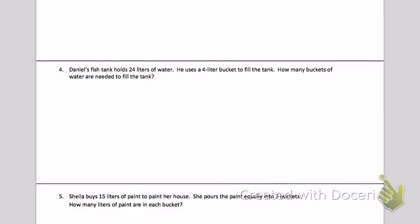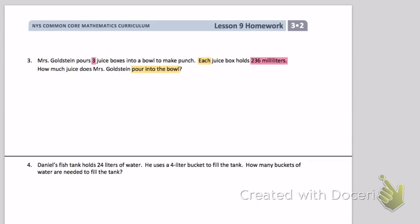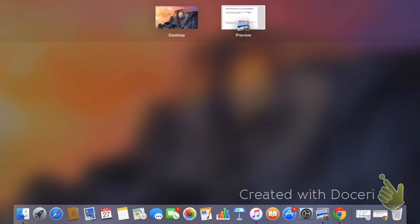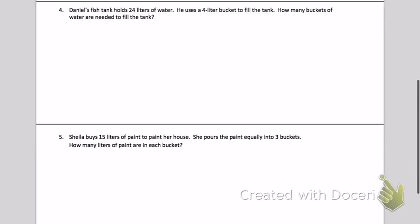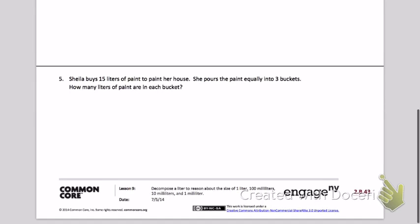We're going to go down to number five. Here is the last problem on your homework assignment. Sheila buys 15 liters of paint to paint her house. She pours the paint equally into three buckets. How many liters of paint are in each bucket?